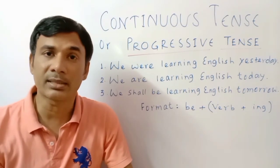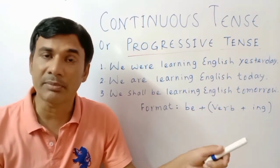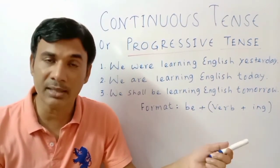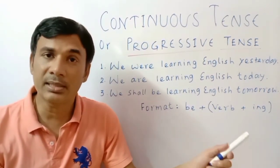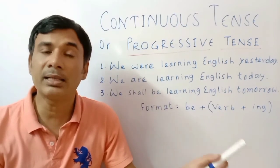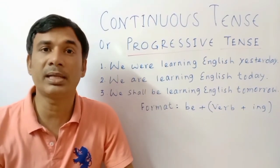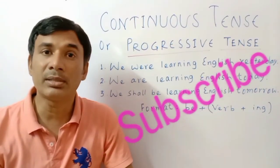So what is the format here? After the subject there is a be-verb, after this there is the principal verb, and ing. This is the format of continuous tense.